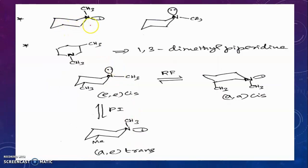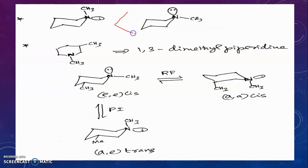Instead of hydrogen, if we introduce a methyl group on nitrogen it becomes N-methylpiperidine. In N-methylpiperidine, the methyl group may occupy axial or equatorial position. In axial position there is 1,3-diaxial interaction, but in equatorial position 1,3-diaxial interactions are absent. Therefore the equatorial methyl group is more stable than axial.